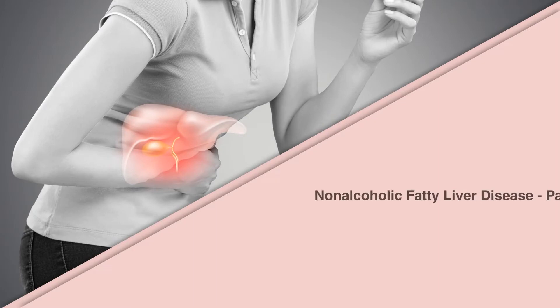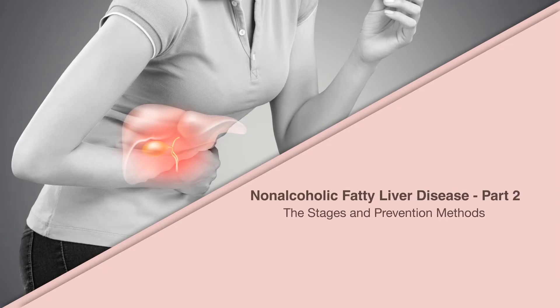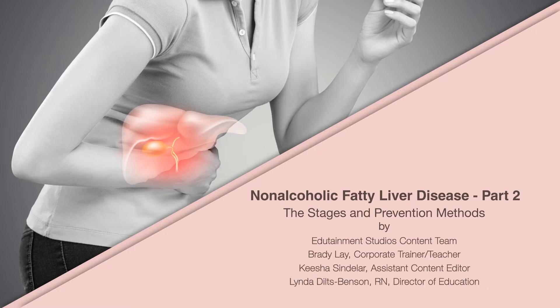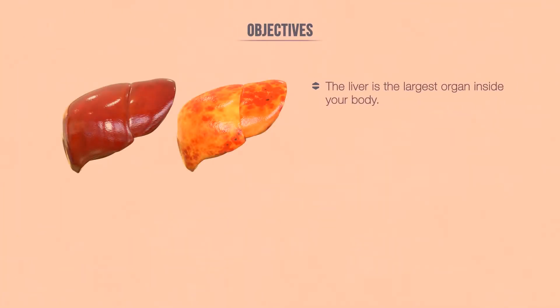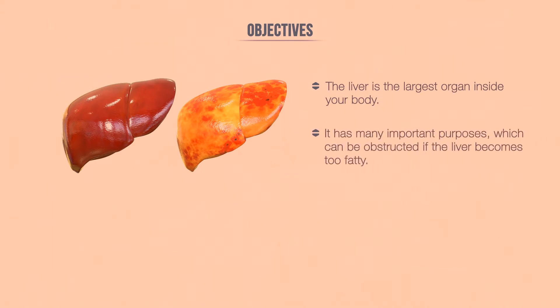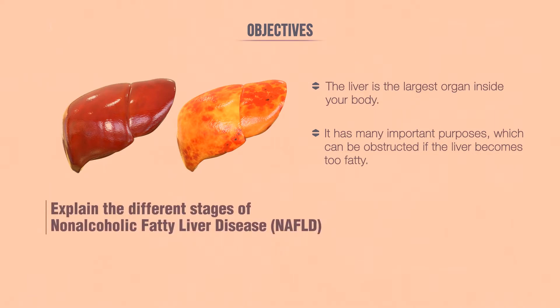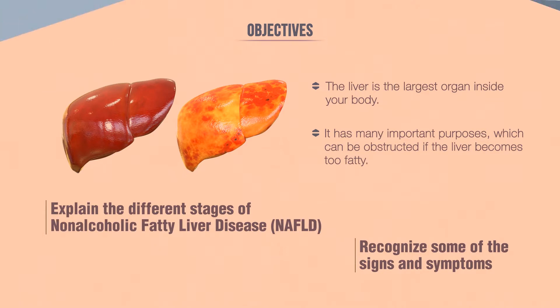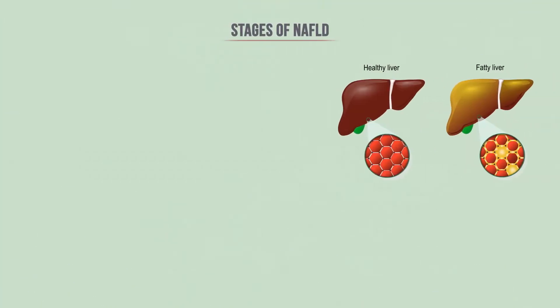Edutainment Studios welcomes you to Non-Alcoholic Fatty Liver Disease: The Stages and Prevention Methods. This module is part two of a three-part series. The liver is the largest organ inside your body and has many important purposes, which can be obstructed if the liver becomes too fatty. In this course, the objective is to help you explain the different stages of non-alcoholic fatty liver disease, NAFLD, and recognize some of the signs and symptoms.